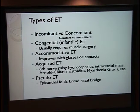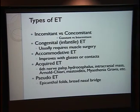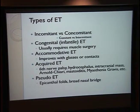Acquired ET is another subtype, which can be caused by a variety of different things, including sixth nerve palsies, hydrocephalus, intracranial masses, and so on. That's one of the categories where you really need a little bit more help to determine the etiology.